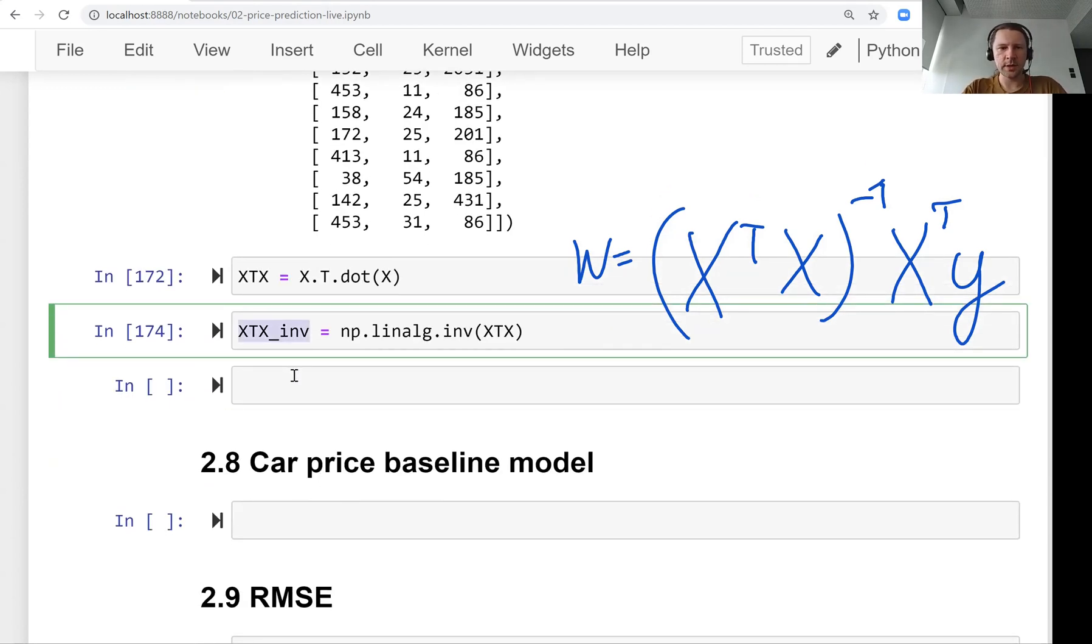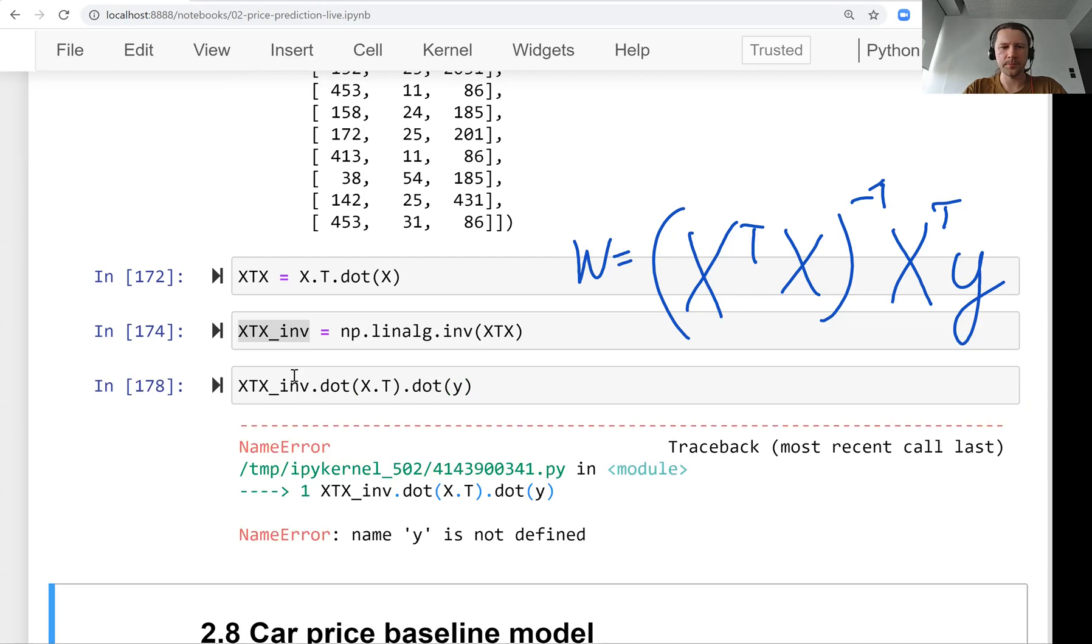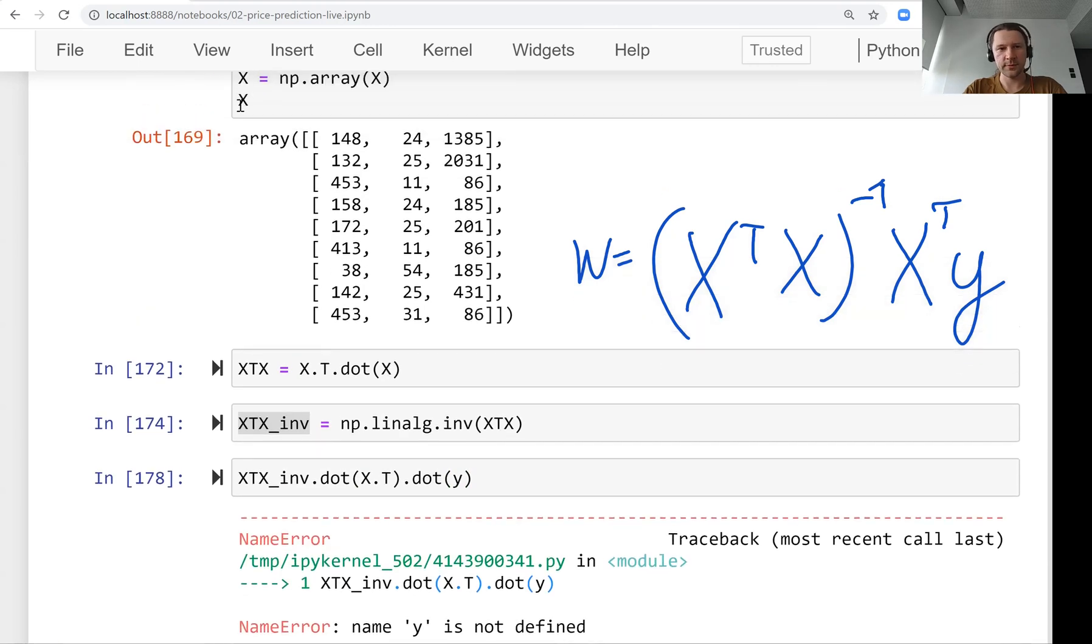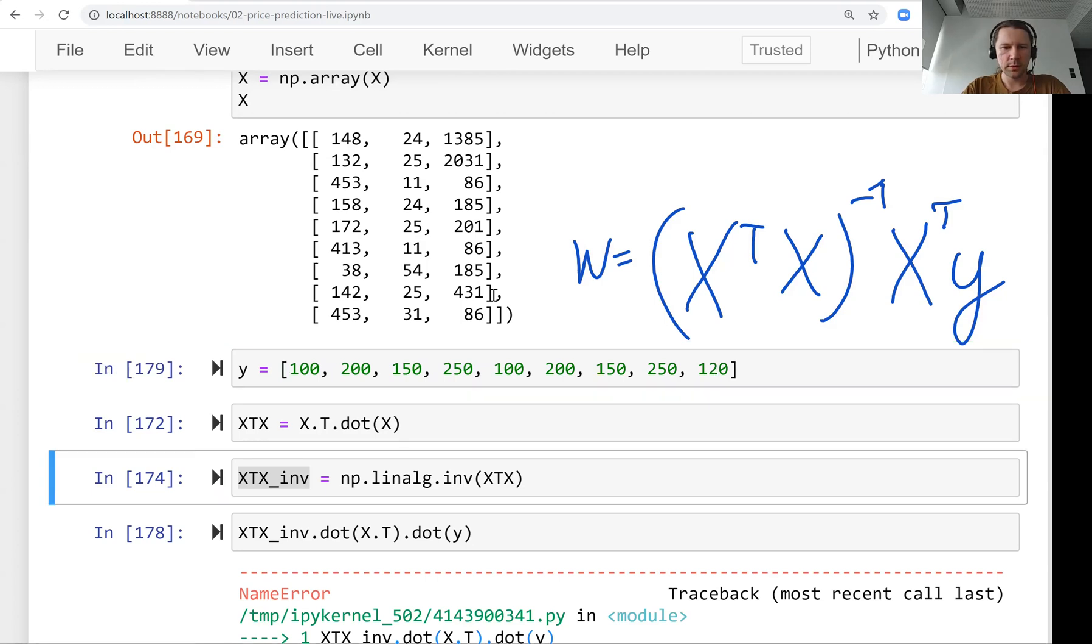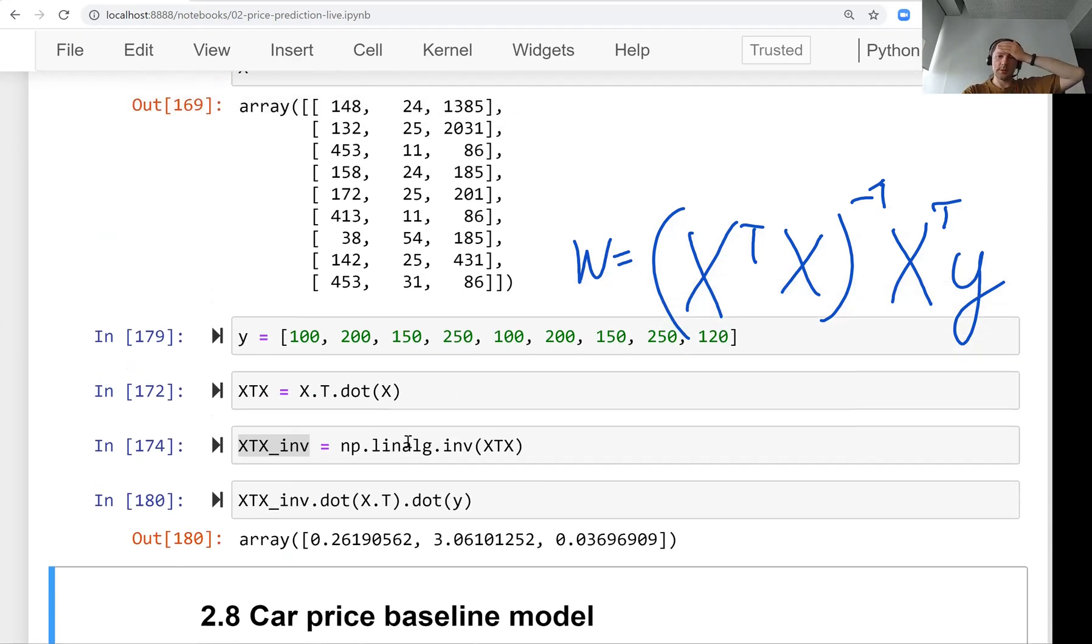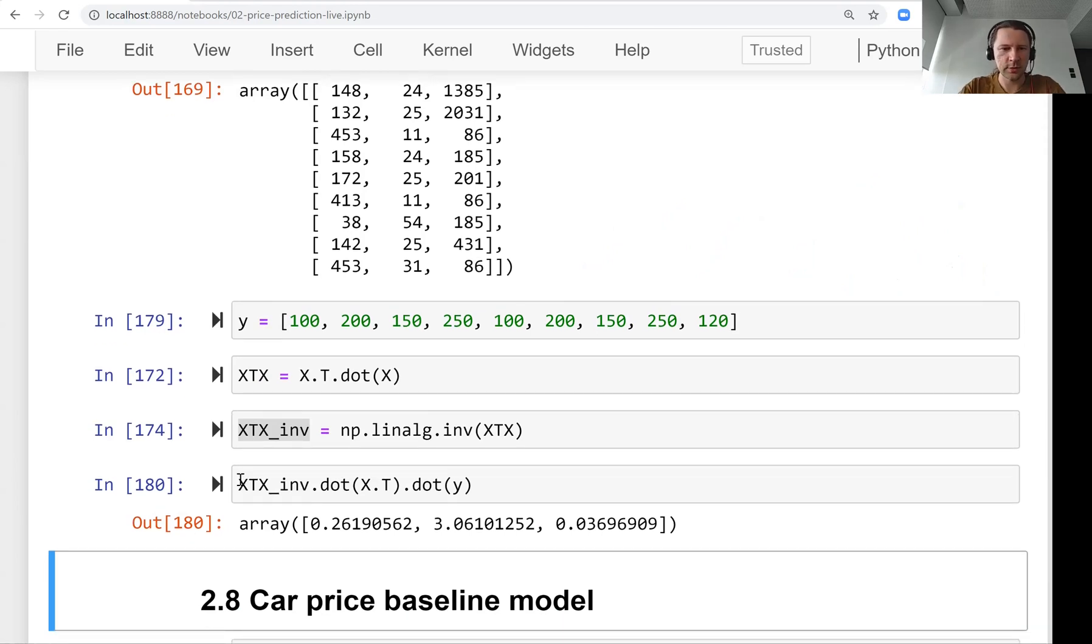Anyways, so we have this one, right? And now we need to multiply it with X transpose and then multiply it with Y. And we don't have a Y, of course. So let's have a Y. I'm just coming up with this on the spot. So how many we have? I need more. So let me just duplicate this and we need one more. Okay, yeah. So this is our W.